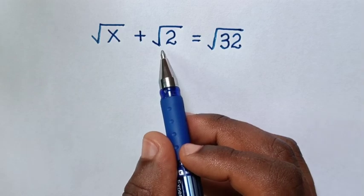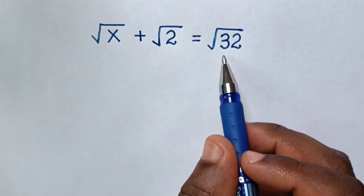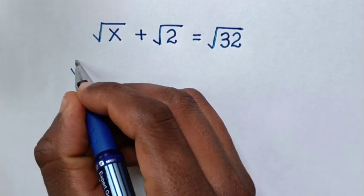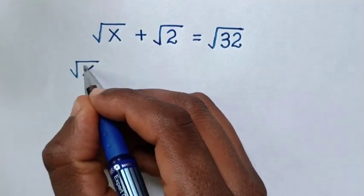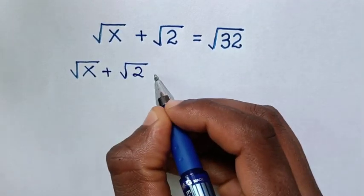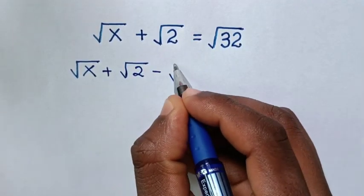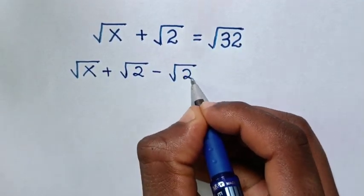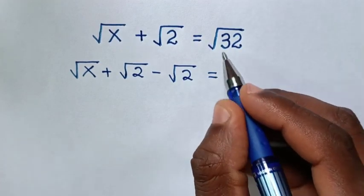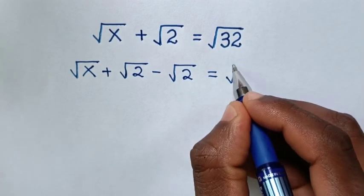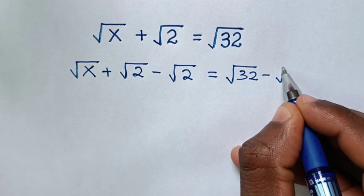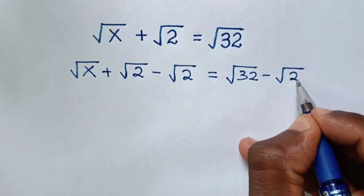So first we will minus square root of 2 from both sides. So it will be square root of x plus square root of 2, then minus square root of 2, is equal to square root of 32 then minus square root of 2.